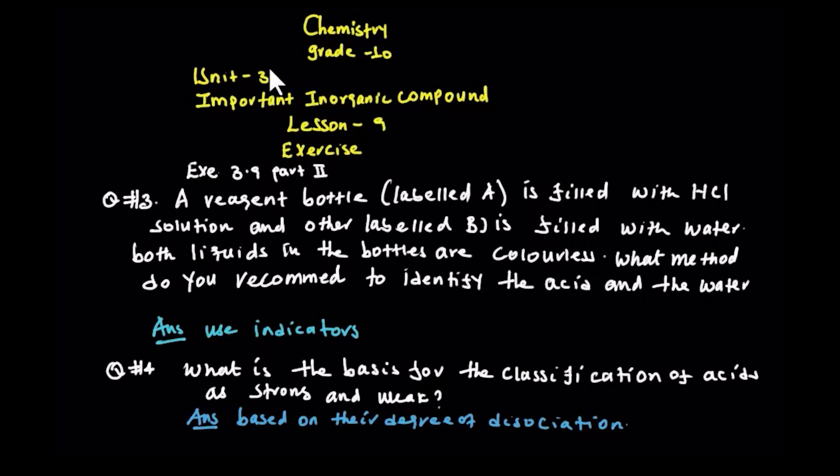We are going to take the exercise. The exercise is 8. Exercise 3.7 plus 3.9 is half a half. This exercise is 3.9. The exercise is 4. Question number 3.